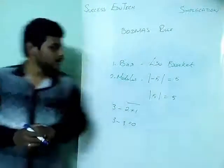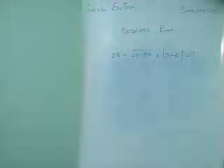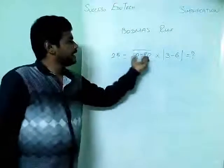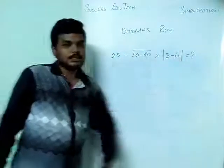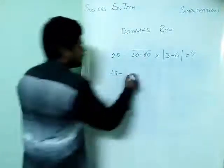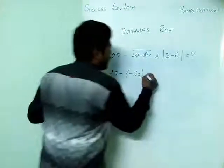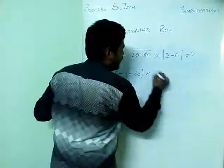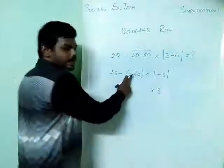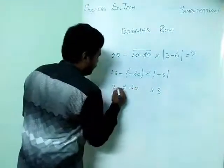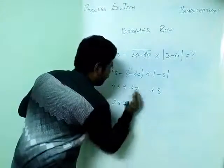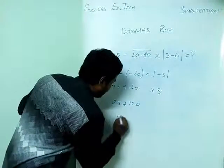Let's solve an example using both operations. The expression is: 25 minus (40 minus 80) bar, multiplied by the modulus of (3 minus 6). First do the bar: 40 minus 80 equals negative 40, so we get 25 minus (negative 40). Then, modulus of (3 minus 6) equals modulus of (negative 3) equals positive 3. Minus times minus is positive, so we get 25 plus 40 multiplied by 3. By BODMAS, multiply first: 40 times 3 is 120, then add 25 to get 145.